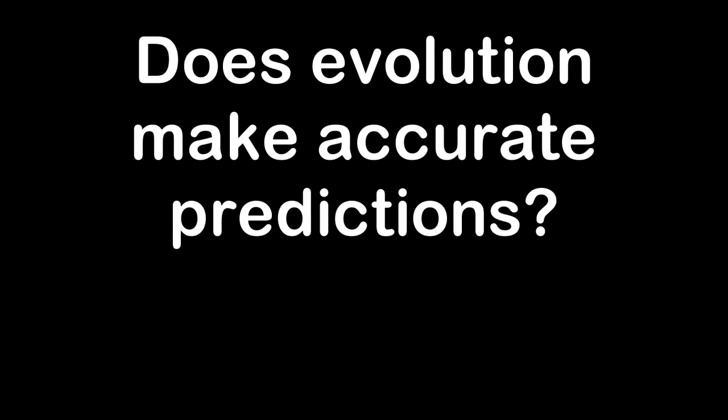As you can see, evolution does make testable predictions, and very detailed and nuanced ones at that. And the evidence we have discovered has matched them beautifully. This could only be the case if evolution were true. So, does evolution make accurate predictions? Check. In Part 3, we will look at their lame attempts to refute evolution with logic.